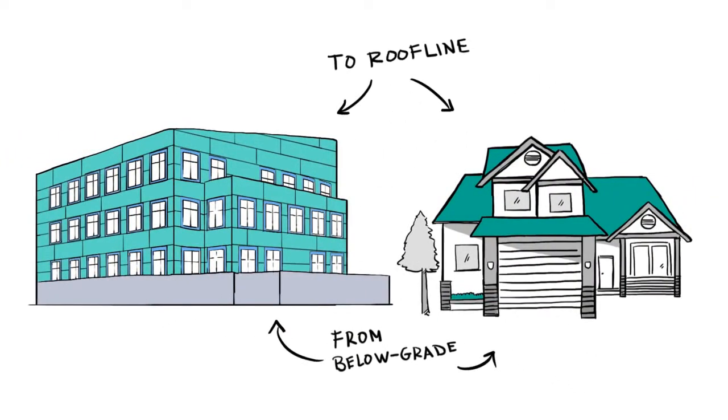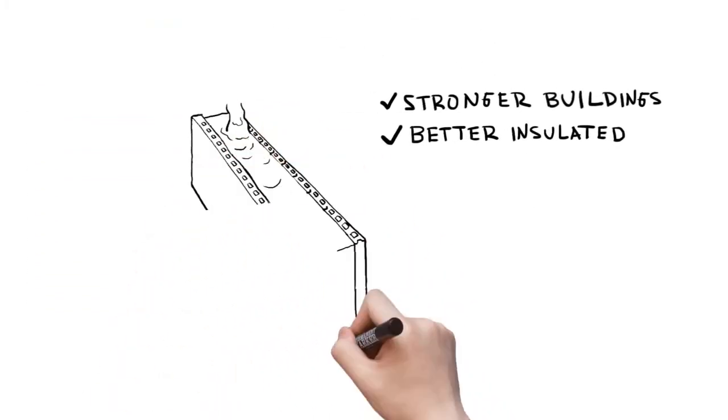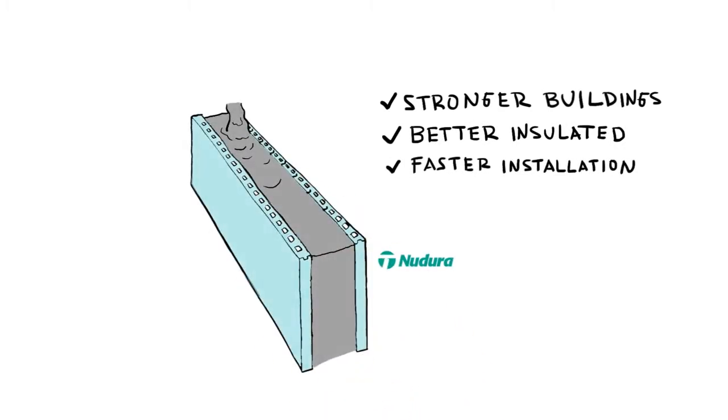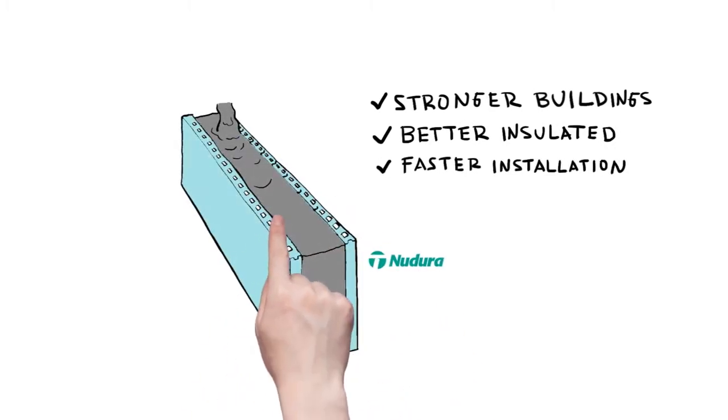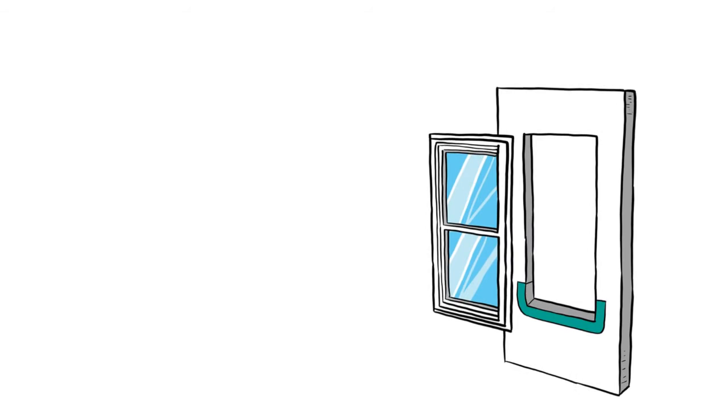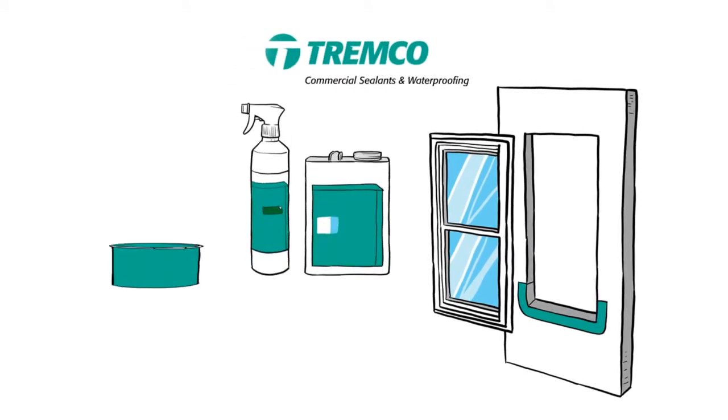From below grade to roofline, many structure types benefit from Nudura insulated concrete forms, which are stronger, better insulated and can be installed faster than traditional framing. Seal the building envelope with Tremco Commercial Sealants and Waterproofing's best-in-class sealants,